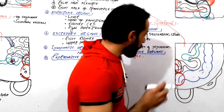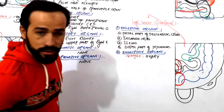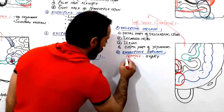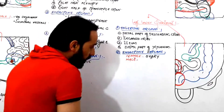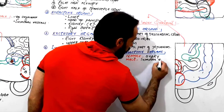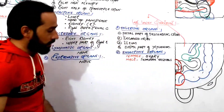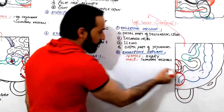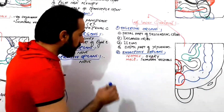The left ovary of the female is found in the left lower quadrant of the abdominal cavity. In the case of males, the seminal vesicles are found, which play a very small role in the endocrine activity of the male body. So in the case of females the endocrine organ is the ovary, and in the case of males it is the seminal vesicles.